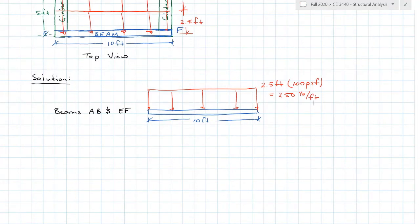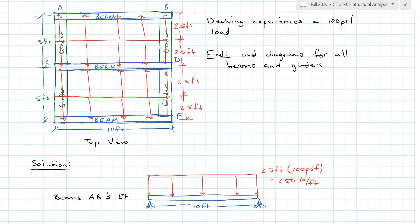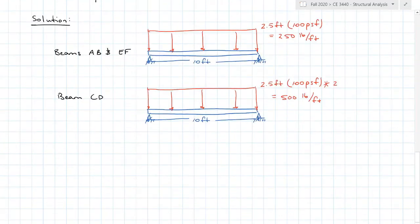Going from the top view to the elevation view of beam AB or EF, we've created a distributed load of 2.5 feet times 100 pounds per square foot acting onto that beam, so 2.5 times 100 is 250 pounds per linear foot. Now this looks like something from statics: a beam supported with a distributed load of 250 pounds per foot. The middle beam CD is a little different because it's getting load from either side, doubling up. Beam CD is 2.5 feet times 100 PSF but times two, so it experiences 500 pounds per linear foot.